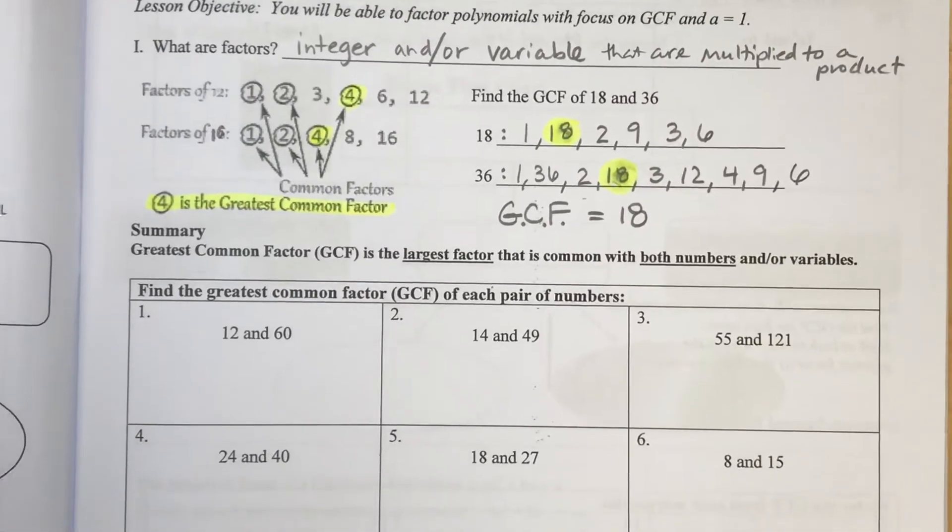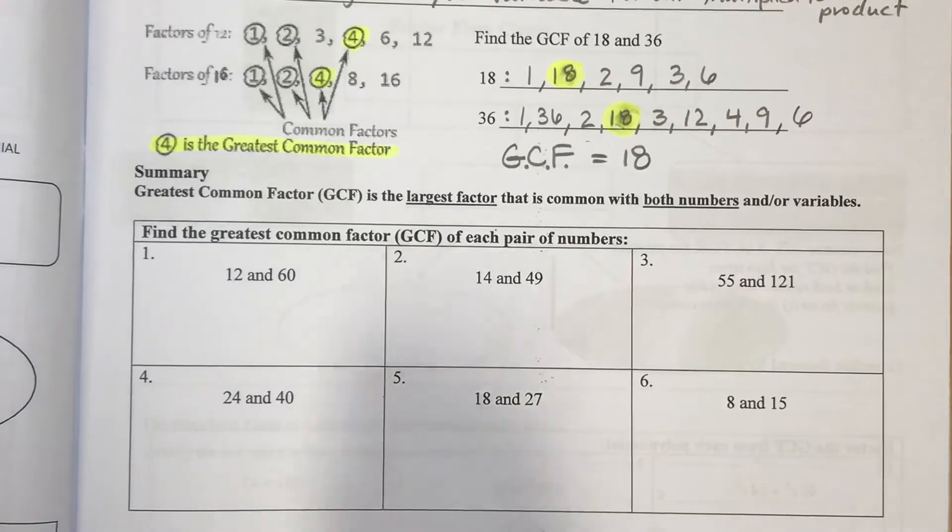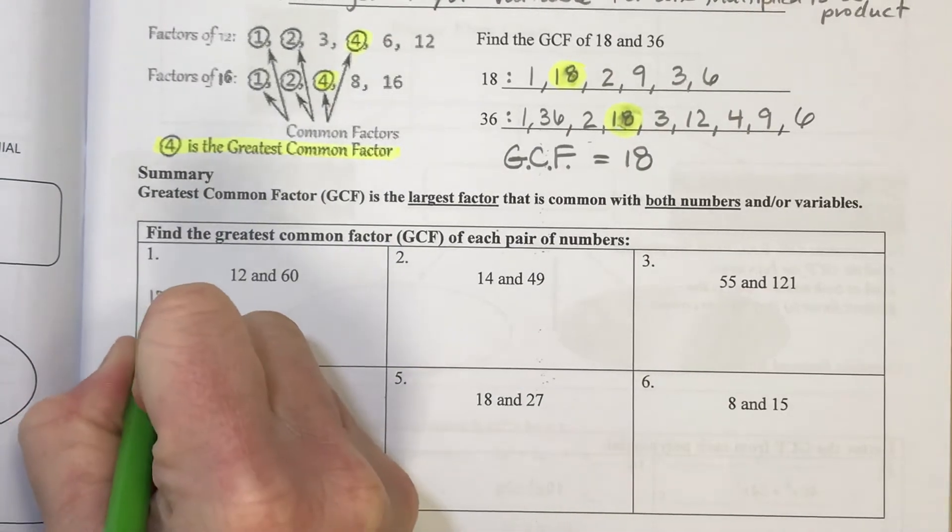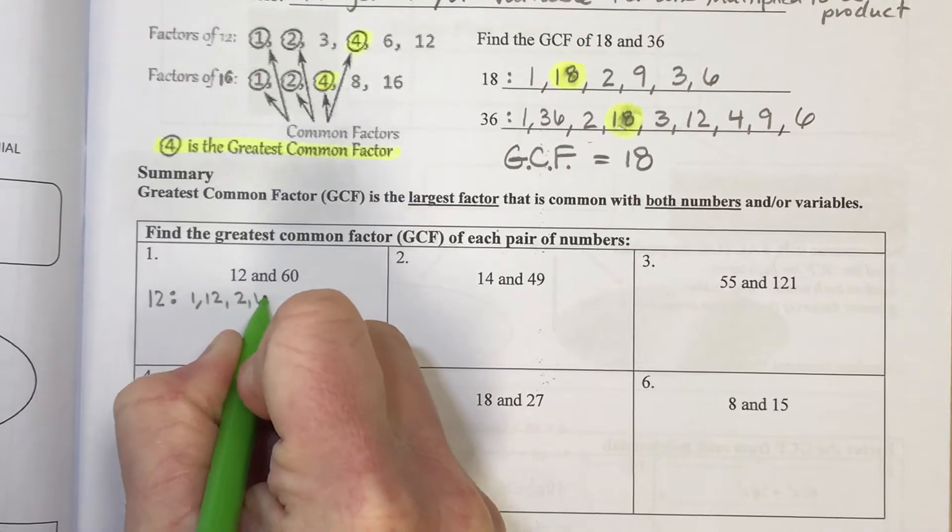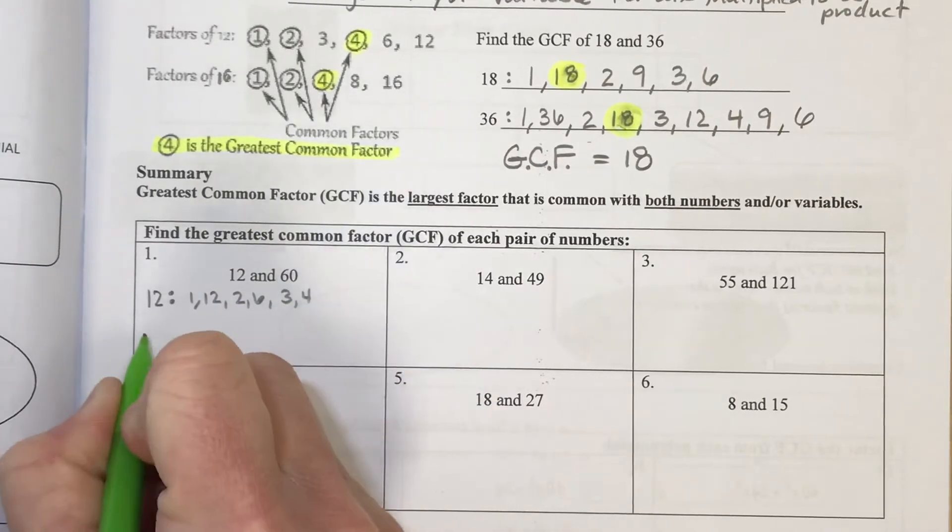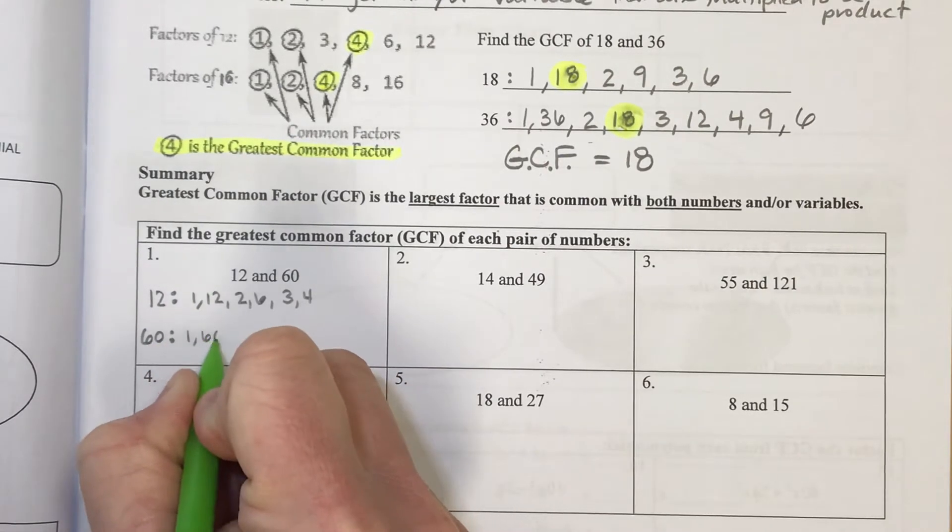So I'm going to try a few more examples where we're just taking the GCF of numbers. And then I'm going to move on towards, in another video, incorporating letters. So numbers that multiply to make 12 would be 1 and 12, 2 and 6, and 3 and 4.